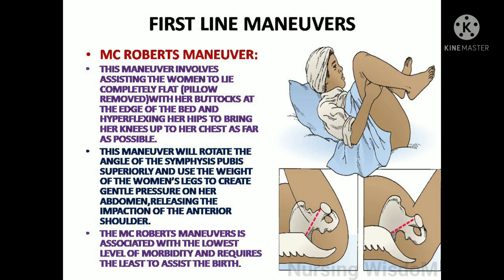The first line maneuver is the McRoberts maneuver. This involves assisting the woman to lie completely flat, with her buttocks at the edge of the bed, and hyperflexing her hips to bring her knees up to her chest as far as possible. This maneuver rotates the angle of the symphysis pubis superiorly and uses the weight of the woman's legs to create gentle pressure on her abdomen, releasing the impaction of the anterior shoulder. The McRoberts maneuver is associated with the lowest level of morbidity and requires the least assistance.